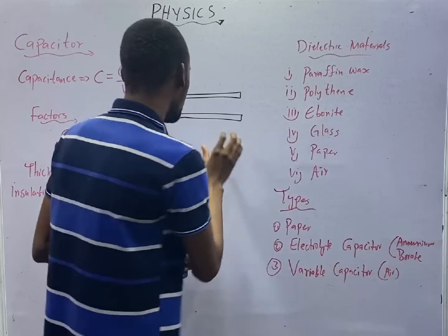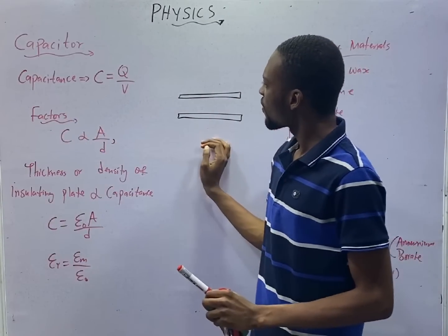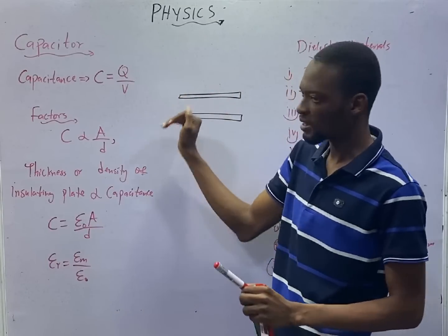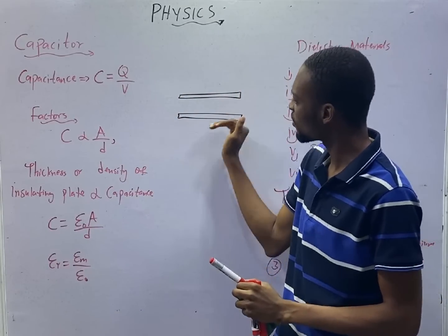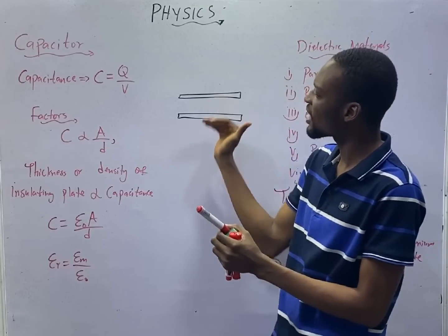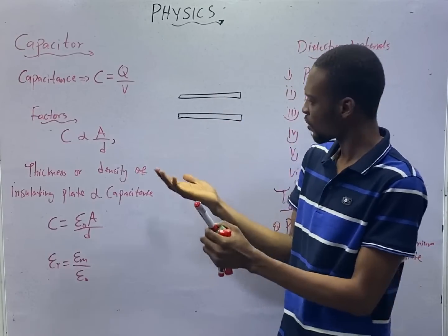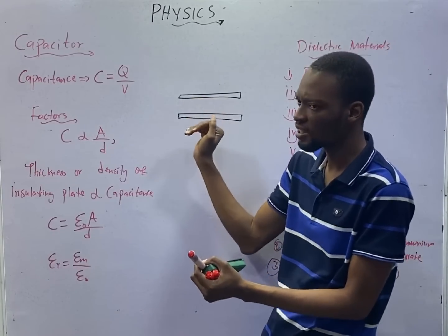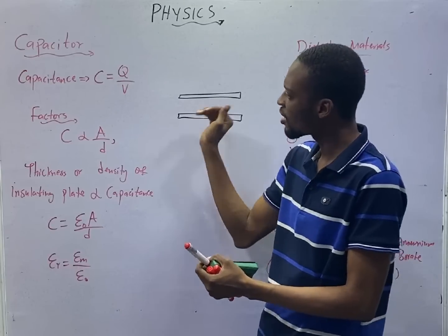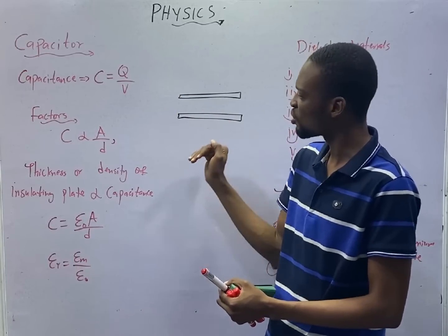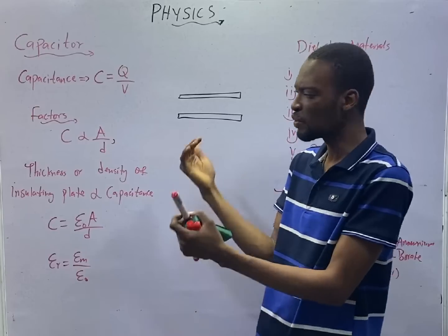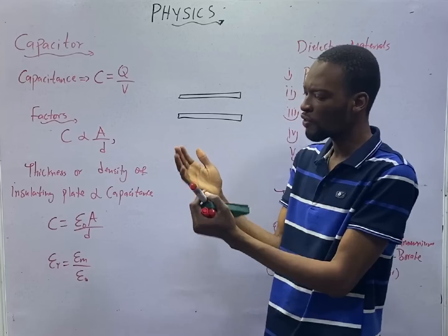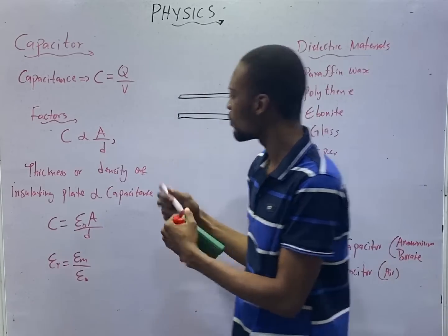Now, the capacitance of a capacitor is simply the ratio of the charge between the two capacitors, the charge of these, divided by the potential difference between them. Once again, the capacitance of any capacitor is the ratio of the charge between the two conductors over the potential difference between them. Potential difference is voltage. And in electricity, current will flow from a place of higher potential to lower potential.